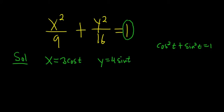So if you do that, you'll see what happens. You're going to get 3 cosine t squared over 9 plus 4 sine t squared over 16, and that's equal to 1.